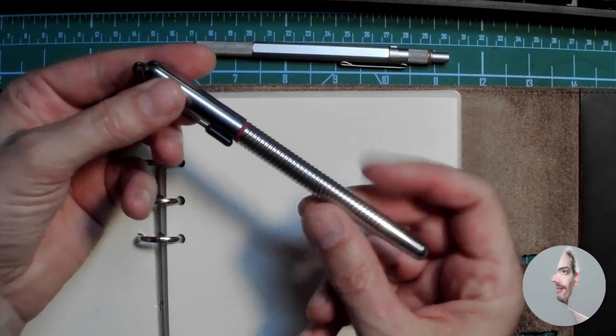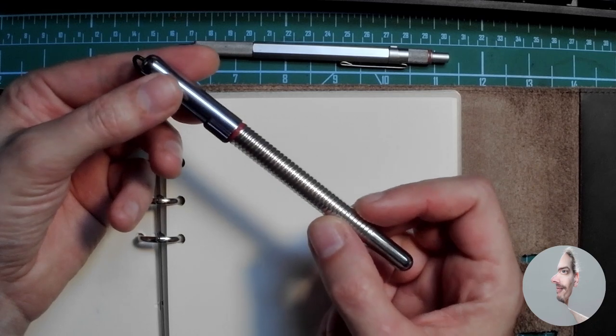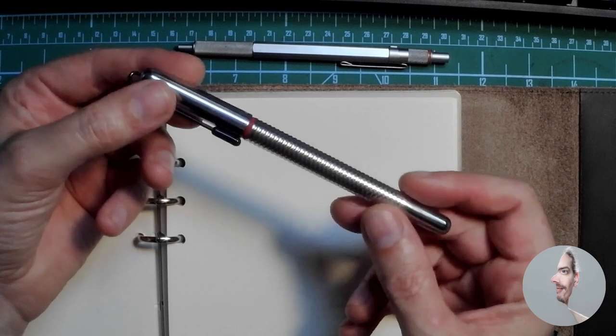A stylograph is a kind of fountain pen but without a nib. The basic construction is pretty similar.